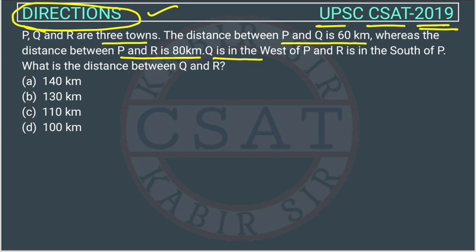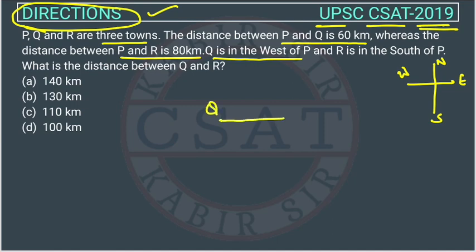Q is in the west of P. Whenever we see a direction question, we should draw the direction diagram — that makes solving the question easy. So Q is in the west of P: Q will be here and P will be here. And R is in the south of P, so R will be below P.